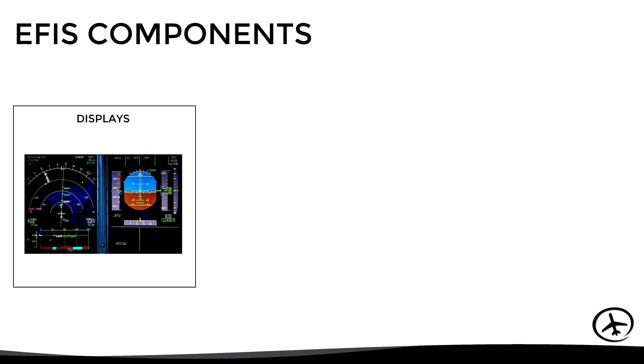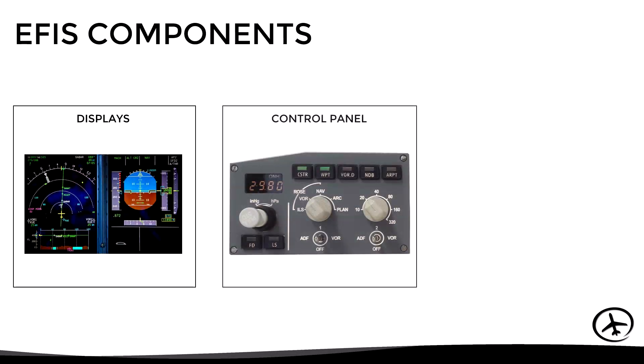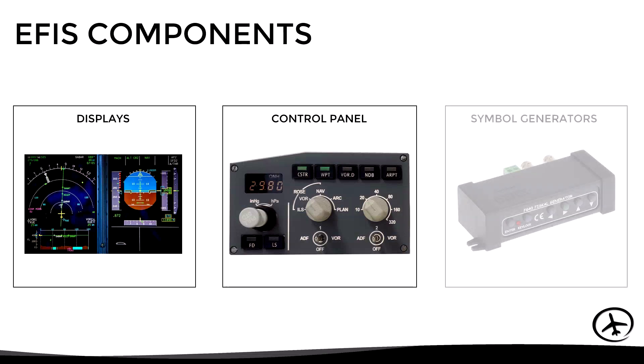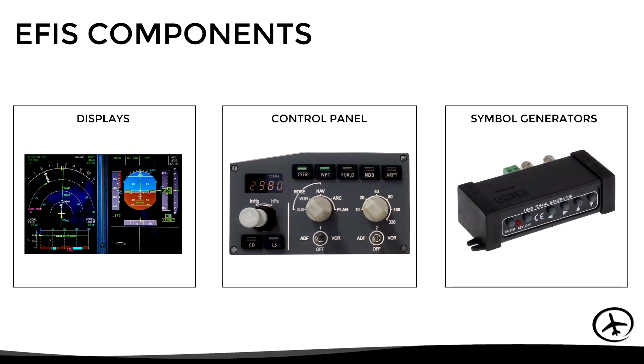The components of a complete EFIS system are: the displays that show the information to the crew, the control panel by means of which the system can be controlled, and one or more symbol generators. Let's now take a closer look at each of these components, starting with the displays.